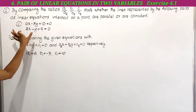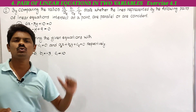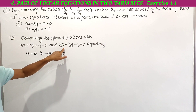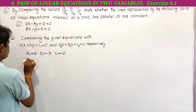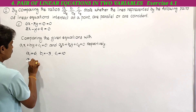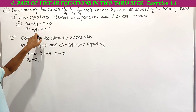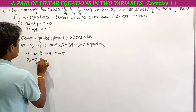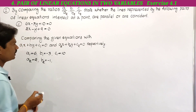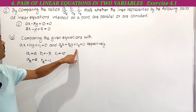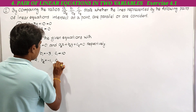Next we compare the second equation with a2x plus b2y plus c2 equal to 0. Here the x coefficient is a2; the x coefficient is 2, so a2 is equal to 2. Here y coefficient is b2; the y coefficient is minus 1, so b2 is equal to minus 1. Here c2 is the constant; the constant is 9, so c2 is equal to 9.